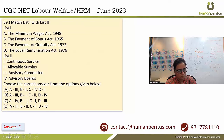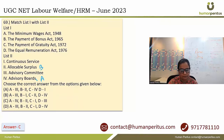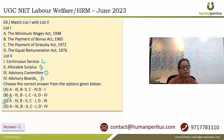Question 69: Match terms with the names of acts. Minimum Wages Act goes with advisory boards. Payment of Bonus Act talks about allocable surplus. Payment of Gratuity Act talks about continuous service. Equal Remuneration Act talks about constitution of advisory committee. Accordingly the answer is option C.